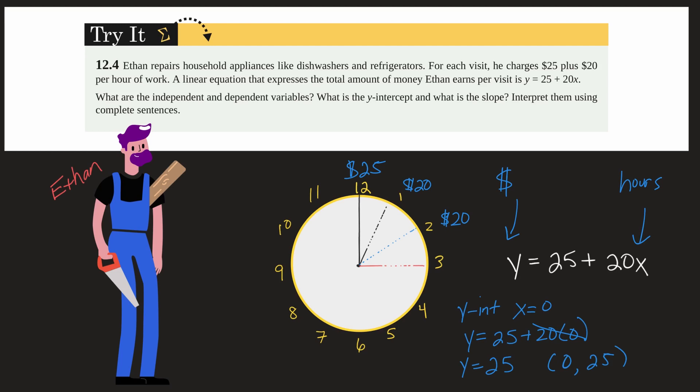Next, what is the slope? So remember y equals mx plus b. We can rewrite that as y equals b plus mx. So right here, 20 is our slope. That's our m.